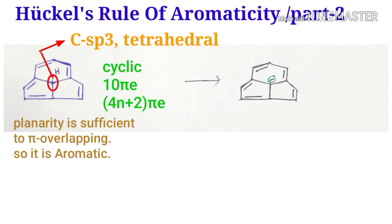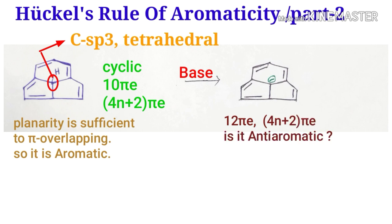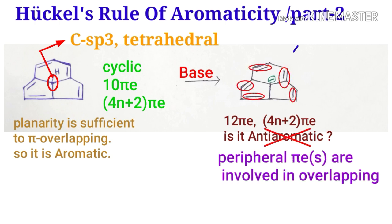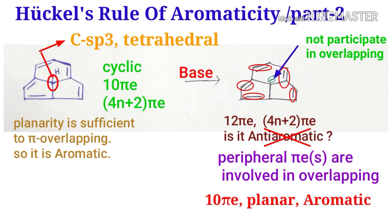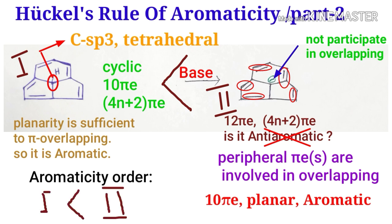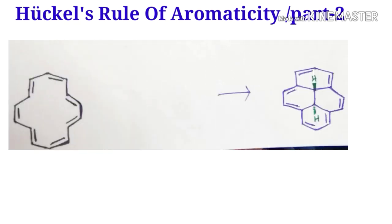In such a case it will be aromatic. Now if we add a base into this system, there are then 12 electrons — a multiple of 4n — so is it anti-aromatic? No, it is not anti-aromatic. Only the peripheral pi electrons are involved in overlapping; this one does not participate. So only these 10 pi electrons undergo overlapping, it is a planar structure, and it is aromatic. This compound is more aromatic than the other because it is more planar, so the aromaticity order of these compounds is like that.